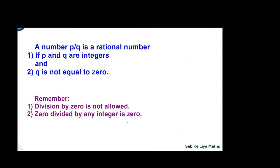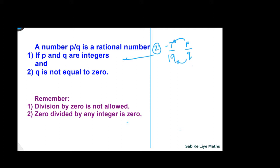The next example is minus 7 upon 19. This is also in the form P by Q, where P is equal to minus 7 and Q is equal to 19. Both minus 7 and 19 are integers, so the first condition is satisfied. And Q is not equal to 0 — Q is 19 — so this condition is also satisfied. That's why this is a rational number.